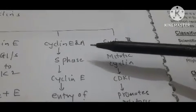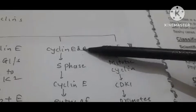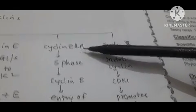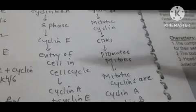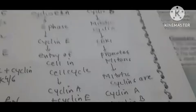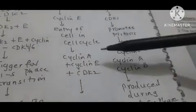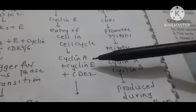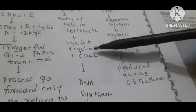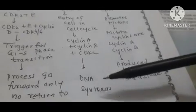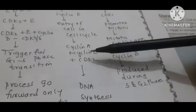During the S phase, there is participation of two cyclins: Cyclin E and Cyclin A. There is formation of a complex of Cyclin A, Cyclin E, and CDK2. This complex is a signal that the cell has to replicate its DNA, so DNA synthesis occurs due to the formation of this complex.